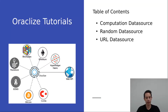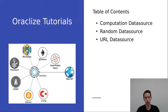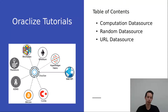Hey everyone, it's Daniel from Oraclize. In this tutorial we will introduce three different ways to generate a random number. In the first part we are going to use the computation data source, which enables the delegation of code execution to an external context. The second part uses the random data source, which enables smart contracts to receive a random number generated in a trusted execution environment using the ledger random number generator.